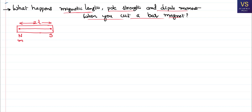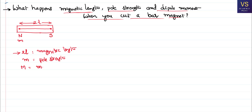2L is the magnetic length — that is the distance between the poles. M is the pole strength, which is the ability of that pole to attract or repel other poles or magnetic materials. Magnetic moment is a product of magnetic pole strength and the length of the bar magnet. These are the basic parameters.